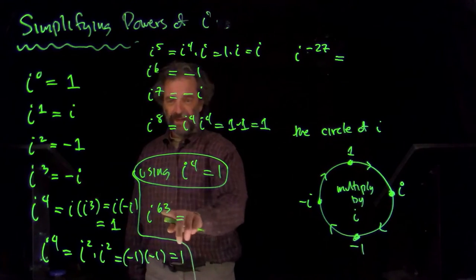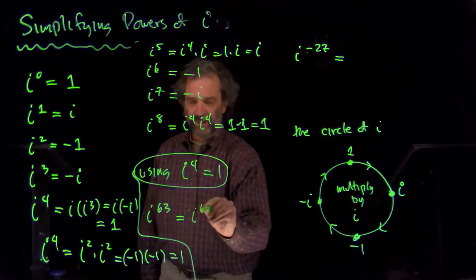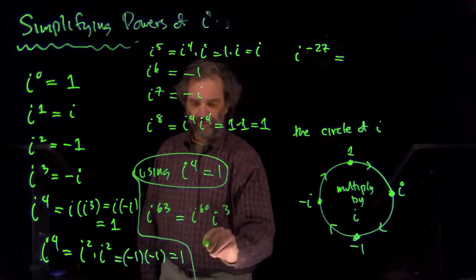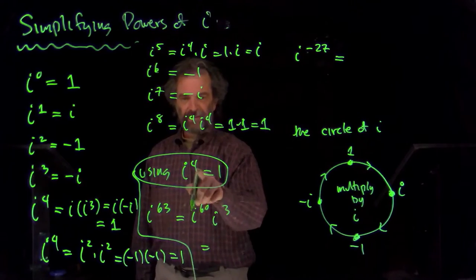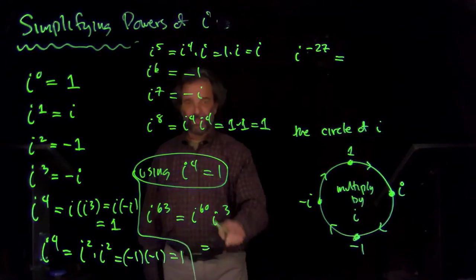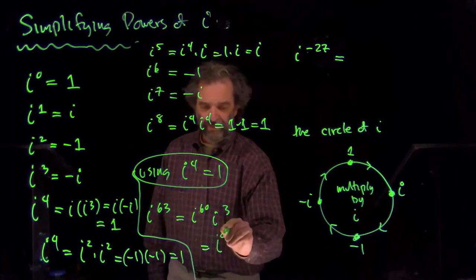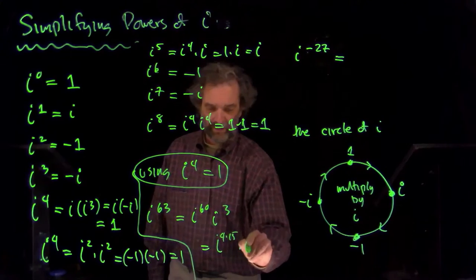I know sixty is a multiple of four. So, that's i times sixty. i times three. And sixty is four times something. That's two times thirty. So, that's four times fifteen. So, it's i to the four times fifteen times i cubed.